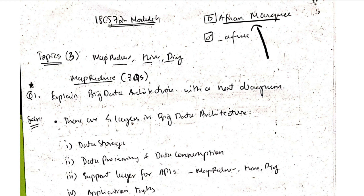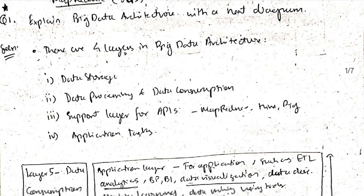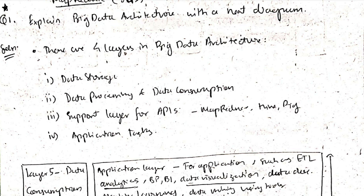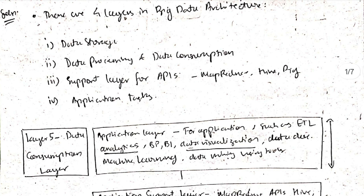MapReduce has three questions. The first super important question is: explain the big data architecture with a neat diagram. In Module 4, if they ask, you have to write the four layers of big data architecture.